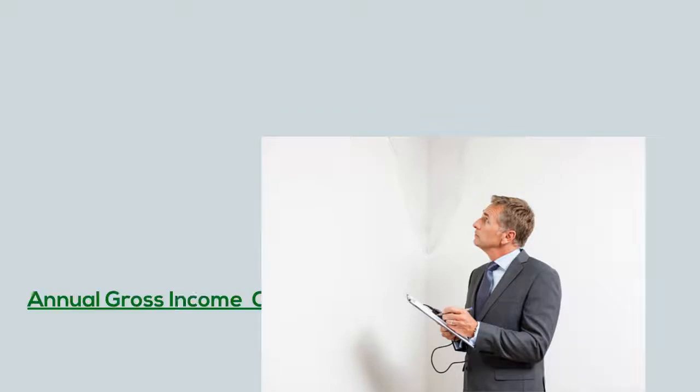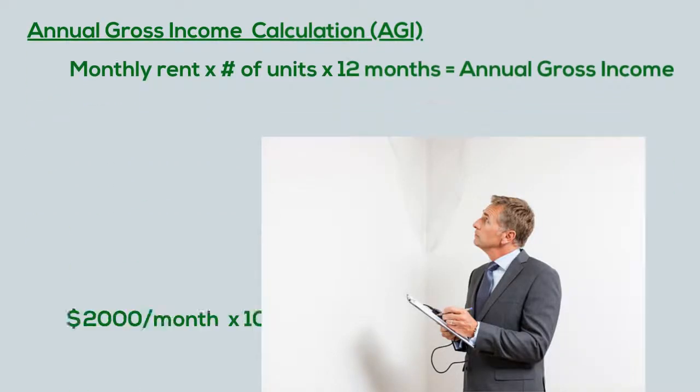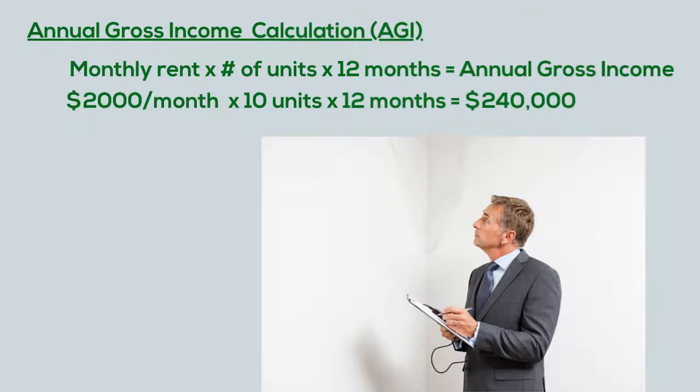The annual gross income can be calculated by taking the monthly rents and multiplying by the number of units times 12 months. For this problem, it's $2,000 per month times 10 units times 12 months, which equals $240,000.